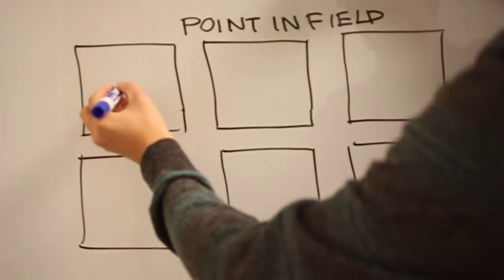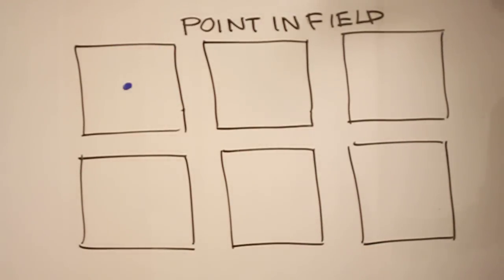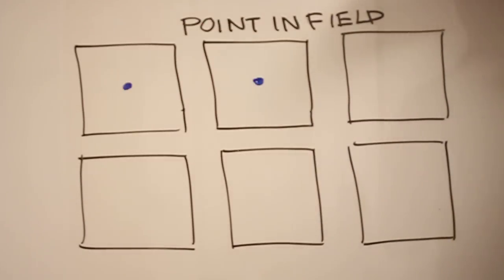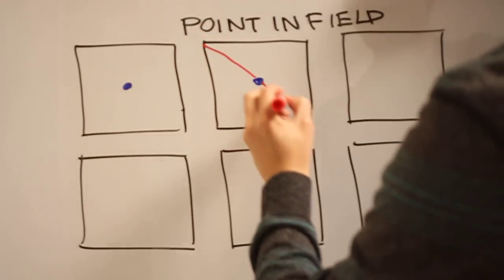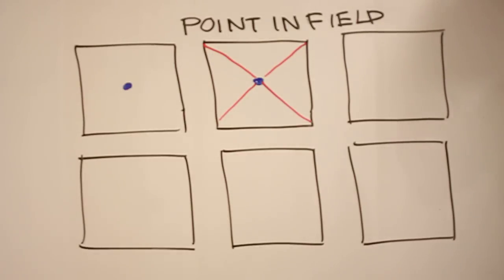A point in the center of a field, in architectural sense, gives a sense of stability. All sides are the same distance away from each other. And someone standing at the point in the center of a field realizes that he's in the center of that field.